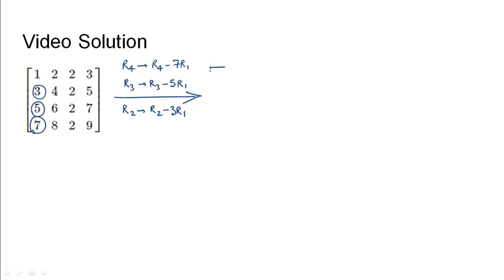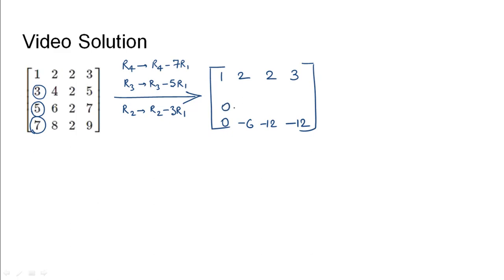After these transformations, the first row remains the same. The last row becomes: 0, −6, −12, −12. The third row becomes: 0, −4, −8, −8. The second row becomes: 0, −2, −4, −4. We now have the first column elements as zero for rows 2, 3, and 4, so we need to further reduce the last rows to zero.